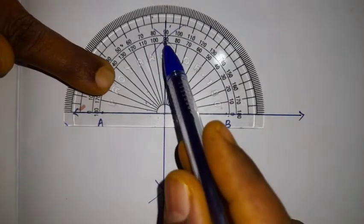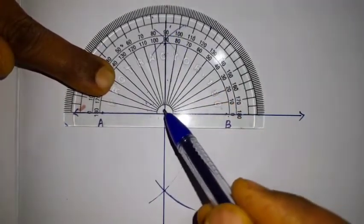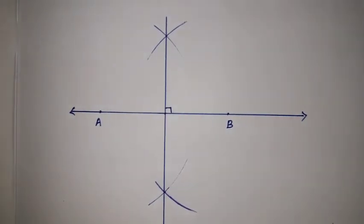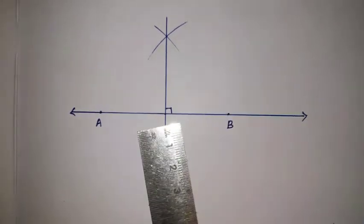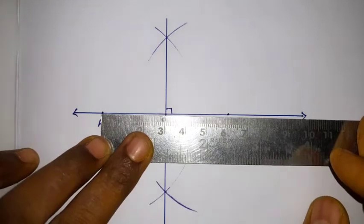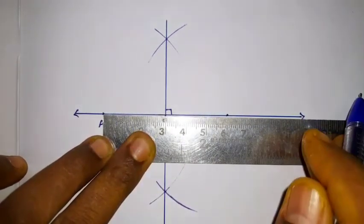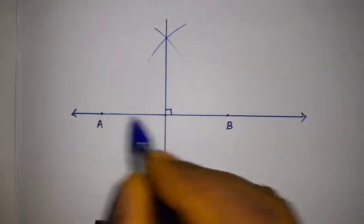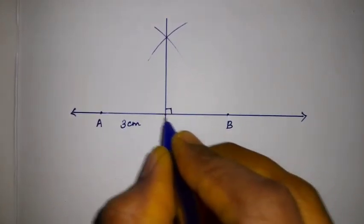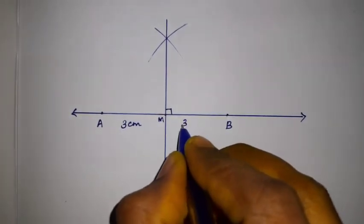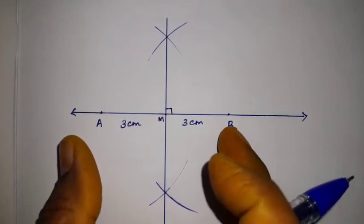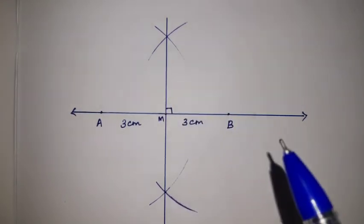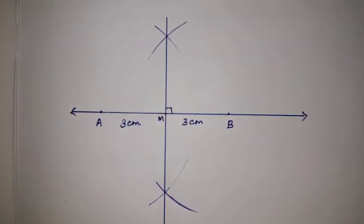The line through the arc intersections makes a 90-degree angle with AB — it is a perpendicular line, and therefore the perpendicular bisector. The 6 cm line segment is divided into equal parts. AM equals 3 centimetres and BM equals 3 centimetres, so M is the midpoint. Through M, we draw the perpendicular line, and that line is the perpendicular bisector.